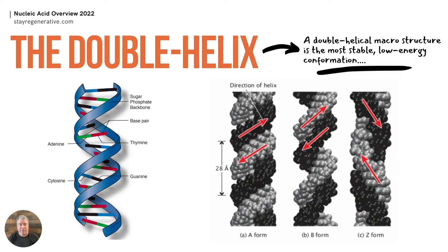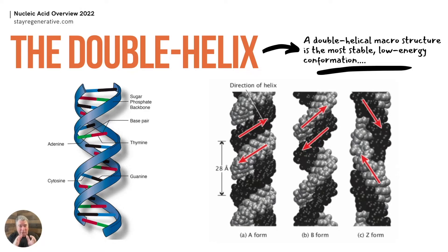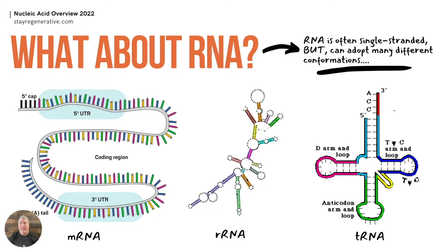We all know the double helix of DNA — it forms that way because energetically it is the most stable configuration. There are multiple types of double helical structures: the A form, which is more tightly wound around centralized proteins; the B form, which is less tight and represents most of the DNA in our bodies in its general state; and the Z form, which winds in the opposite direction. These structures can interchange — a particular stretch of DNA can find equilibrium between the A, B, or Z forms depending on function.